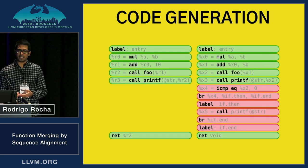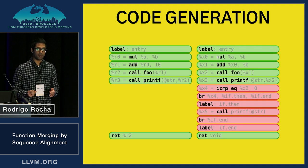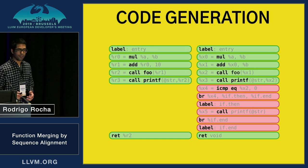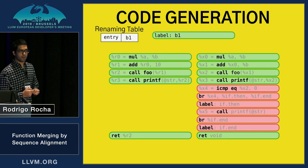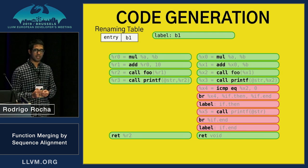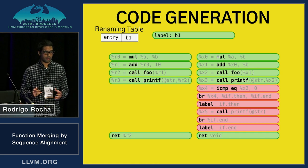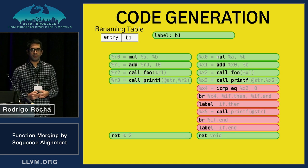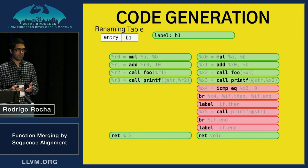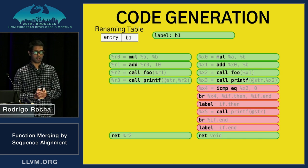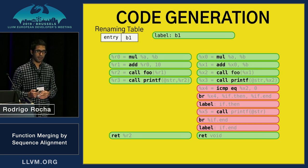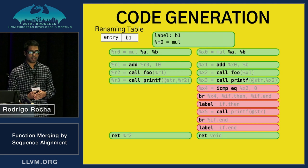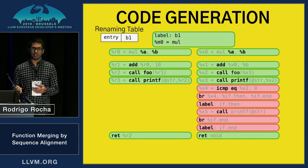Now that we have this aligned sequence, we can actually perform the code generation to compute the merge function. Starting from the top again, labels will always generate a new basic block. We also compute this renaming table, and we need to keep track of that to compute the operands. These two multiplications will create a new instruction in the basic block, and the operands are identical so we can just copy them.